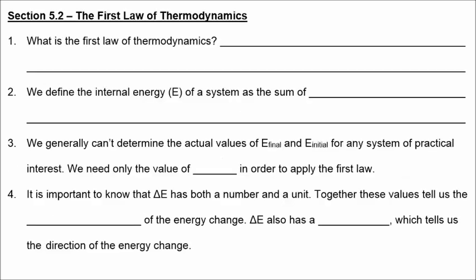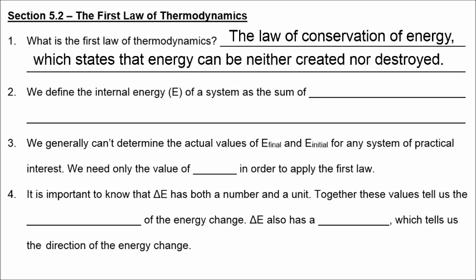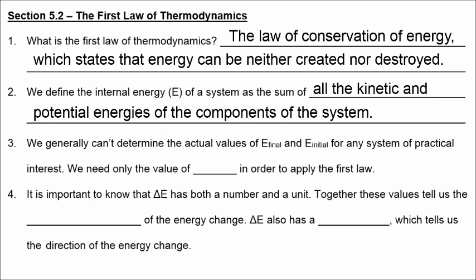Section 5.2 is entitled The First Law of Thermodynamics, defined as the law of conservation of energy, which states that energy can neither be created nor destroyed. The internal energy of a system is the sum of all the kinetic and potential energies of the components of the system. Even though we generally can't determine the actual values of internal energy, we only need the value of delta E, the change in energy, to apply the first law. Delta E has both a number, a unit, and a sign — the sign tells us the direction of the energy change.